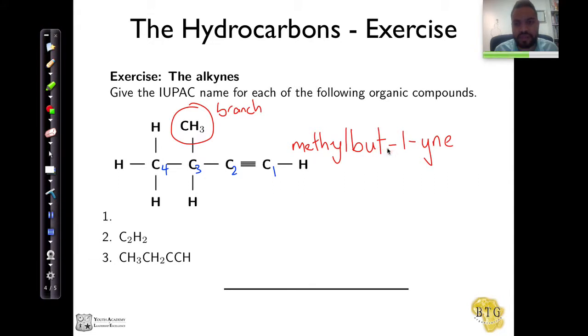And so we're going to add that to the name here in front: methyl but-1-ine. We now also need to indicate on which carbon the methyl part lies, and that's going to be 3-methyl but-1-ine. And there we have it. There's the name, the IUPAC International Union of Pure and Applied Chemistry for the first example.